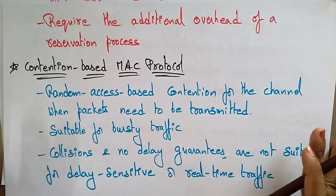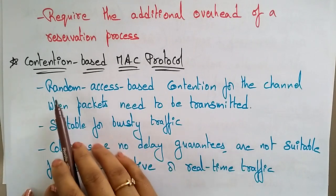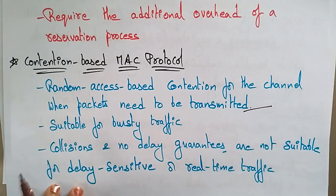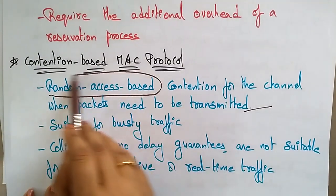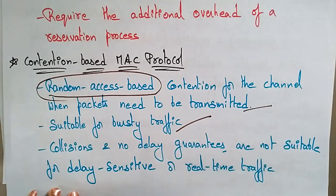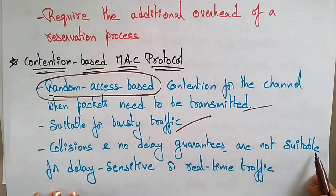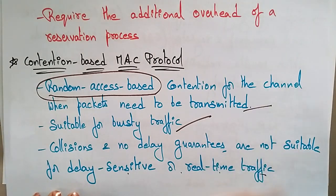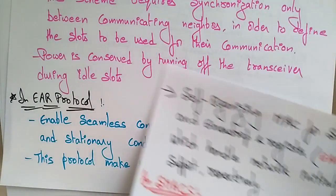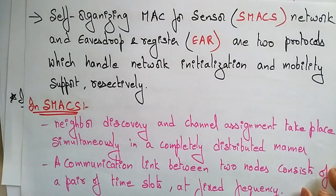The contention-based MAC protocol uses random access-based contention for the channel where packets need to be transmitted. It is suitable for bursty traffic. However, it has collisions and no delay guarantees, making it not suitable for delay-sensitive or real-time traffic. These are the three main MAC protocols for sensor networks.